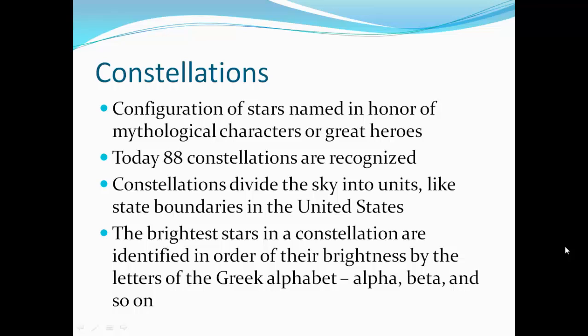The constellations are configurations of stars, named in honor of mythological creatures or great heroes. 88 constellations are recognized. Constellations are divided in the sky into units, like state boundaries in the United States. The brightest stars in the constellations are identified in order of brightness by the letters of the Greek alphabet. So the brightest star is the alpha star of the constellation, the beta star, and so on.